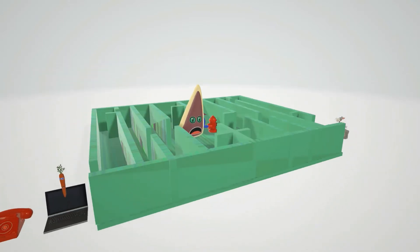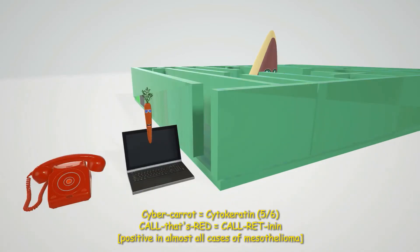The ass is trying to get to the end of the maze to the prizes. We have this cyber carrot, which helps us remember cytokeratin 5-6 is associated with mesothelioma, as well as the phone that's red or call that's red for calretinin. Calretinin and cytokeratin 5-6 are positive in almost all cases of mesothelioma. This helps differentiate from carcinoma in which these are negative.